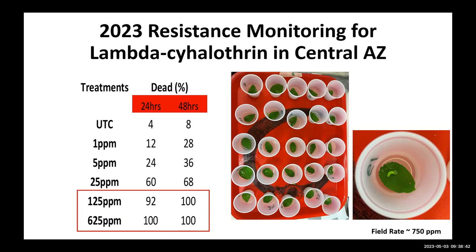Looking at the bioassay rates — 125 to 625 — we are getting 100 percent mortality after 48 hours. The field rates depend on the amount of water you apply: about 20 gallons gives an equivalent rate of around 750, and 10 gallons gives half that at 375. If applying by air at five gallons, that would be half again. Here in central Arizona we are still able to alternate pyrethroids with something like indoxacarb, which helps a little, but there aren't many options and we need to be wise about stewardship.